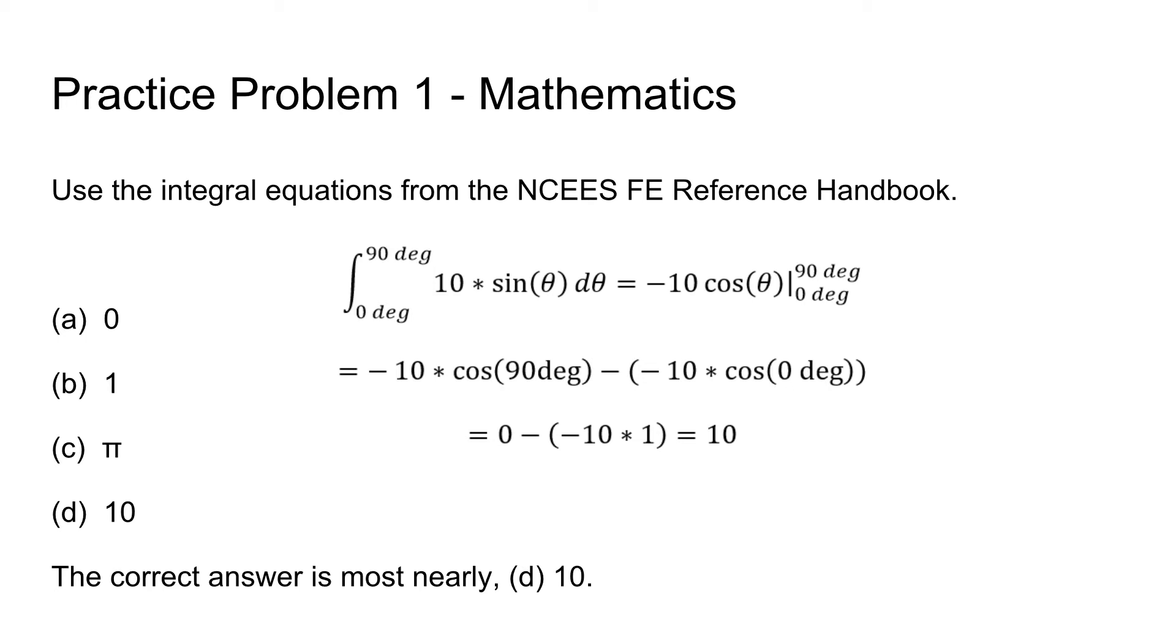So if you add those two values together, 0 minus negative 10, you get a value of 10. So the correct answer is going to be d, 10.